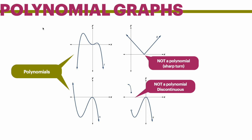A polynomial graph is going to be a continuous function. However, it cannot have a sharp turn as seen on the right hand side — because of this sharp turn, this would not be a polynomial graph. This is actually an absolute value function. The reason this other graph is not a polynomial graph is because there is a jump; it is not a continuous function. It does not flow completely through the entire graph. A polynomial would be the two graphs on the left hand side.